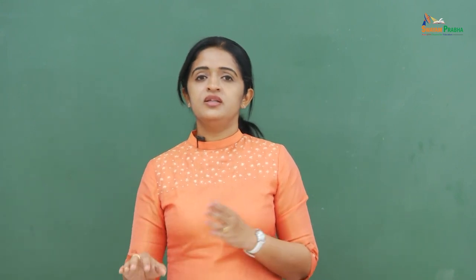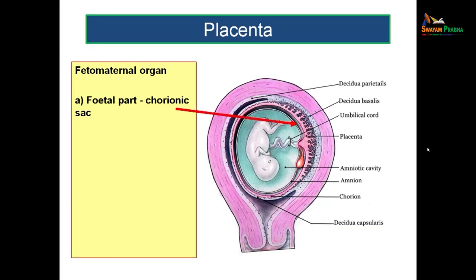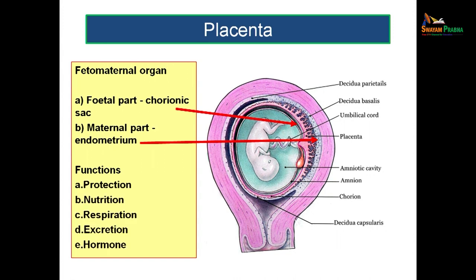As the word implies, there will be a fetal part that is part of the chorionic sac, and a maternal part that belongs to the endometrium. The functions of placenta include protection of the fetus, acting as a source of nutrition, helping in respiration, excretion of waste products, and secretion of important hormones.